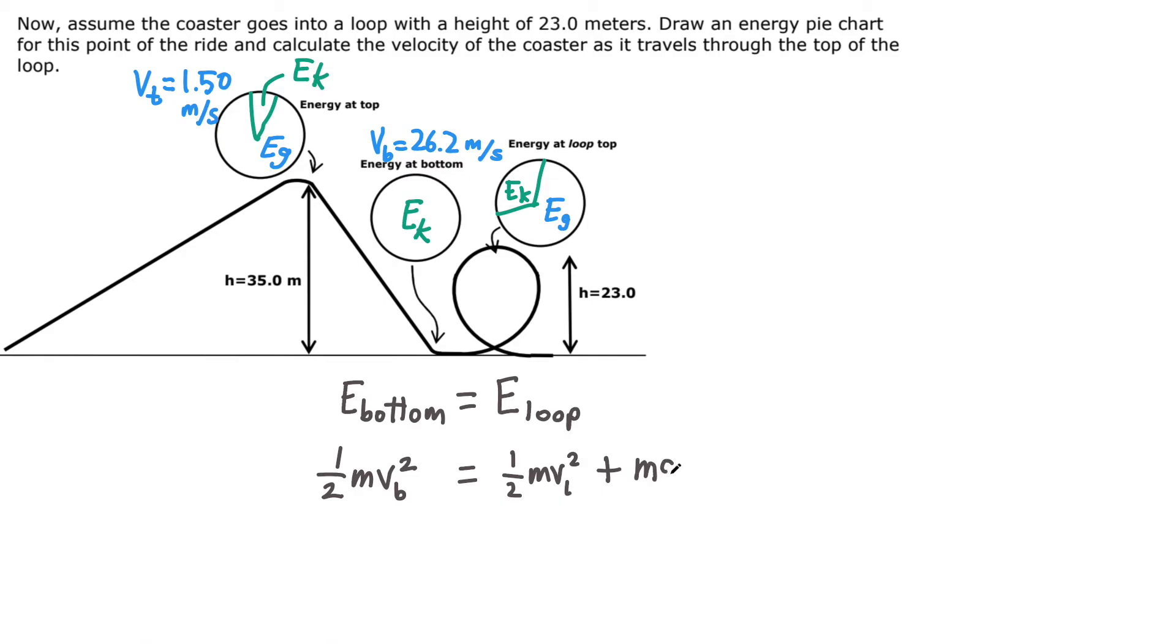At this point, we could plug in numbers for the known quantities. We know the mass of the roller coaster, and again we can cancel that term because it shows up in every term in the equation on both sides. We know that the speed at the bottom of the hill is 26.2 meters per second. We don't know the speed at the top of the loop—that's v subscript l, that's what we're solving for. And again, we do know the value of g, and we do know the value of h.